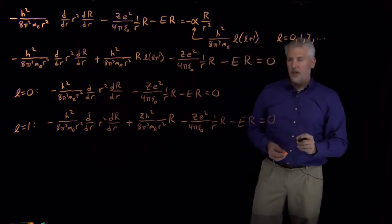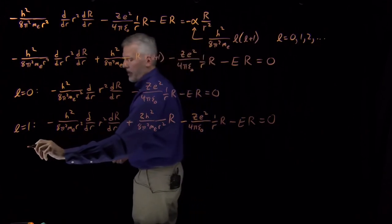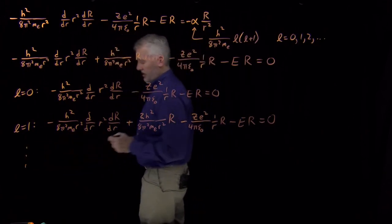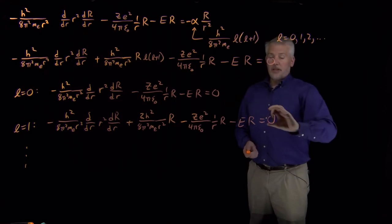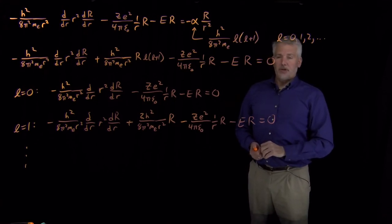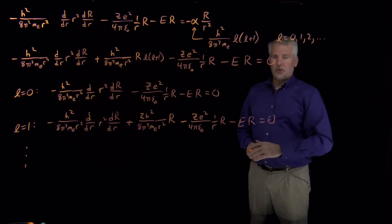And again, those must sum to 0. So I could write out an infinite number of these equations. The point being the differential equation I have to solve when L equals 0, that's a different differential equation than the one I have to solve when L equals 1 or L equals 2 and so on.